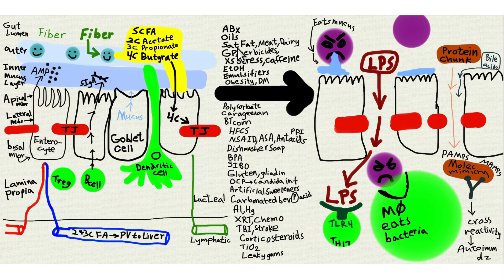Oils are toxic to your gut lining and increase the risk of leaky gut. Saturated fat is associated with leaky gut — meat and dairy have no fiber.